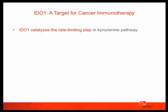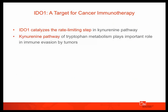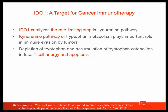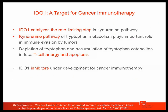IDO1 is an enzyme that catalyzes the rate-limiting step in the kynurenine pathway of tryptophan degradation. This pathway has been recognized as being of central importance in cancer because it's used by tumors to evade the immune system. It has been shown that the depletion of tryptophan and the accumulation of tryptophan catabolites induces T-cell anergy and apoptosis. Therefore, IDO1 inhibitors are in development for cancer immunotherapy, and importantly, these inhibitors are not thought to be used as a single agent therapy, but in combination with other strategies such as immune checkpoint inhibitors.